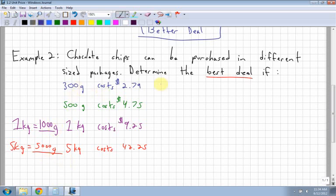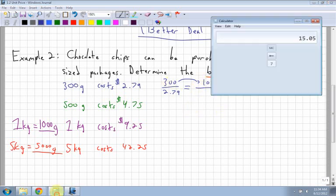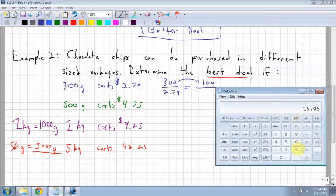So for this one, I have 300 grams costs $2.79. How do I get to 100 grams? What do I divide 300 by to get to 100? If you're unsure, just divide them. Take 300, divide it by 100.